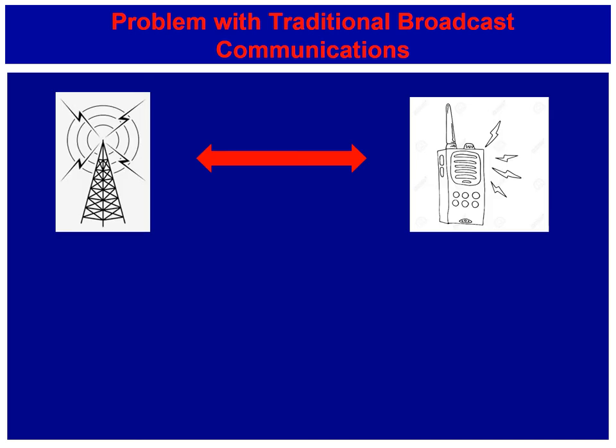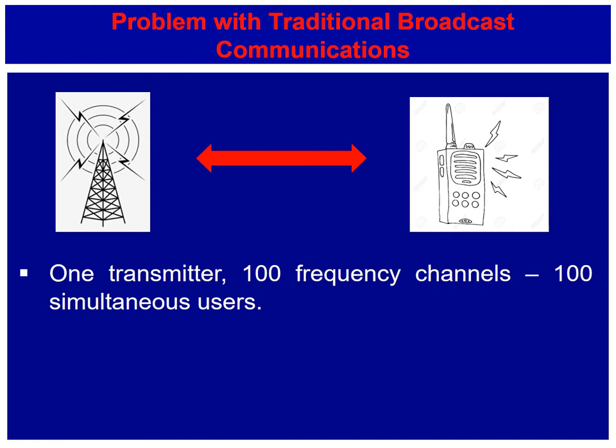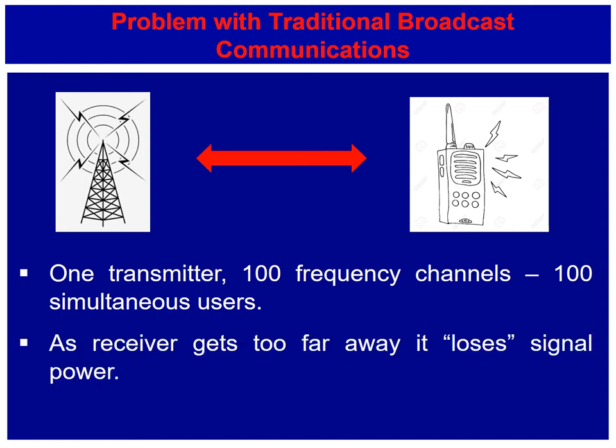The fundamental problem with two-way radios or broadcast communications was this: you have a transmitter transmitting to a receiver. Imagine you only had 100 frequency channels in the whole of the country — then you could only have 100 simultaneous users. And the second problem was that as the receiver gets too far away, it loses signal power. So how do we overcome that to get the cellular phone where you can make a call to anybody anywhere in the world from anywhere?